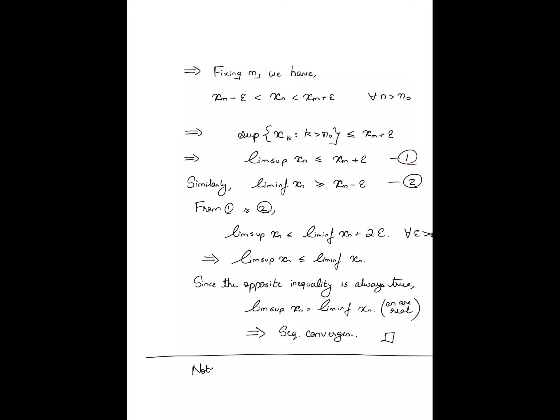The key point is that the part where Cauchy implies convergence requires the least upper bound property. It is with the least upper bound property that we are allowed to talk about the supremum and infimum of any set, and therefore the limsup and liminf of a sequence and their relationship to each other. All of that relies crucially on the least upper bound property, and it is this side of the equivalence — the Cauchy implies convergence part — which depends on it.